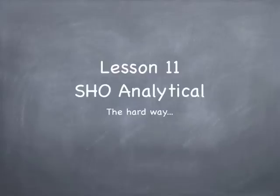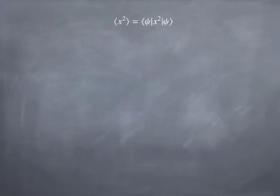It's about the analytical approach to solving the Schrödinger equation for the simple harmonic oscillator. But before we get into that, I wanted to recap something we did in class the other day, and that is calculating the expectation of x squared in the n equals 4 state of the simple harmonic oscillator.